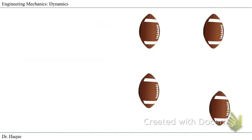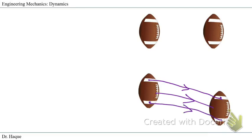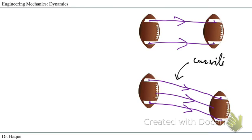The second type is curvilinear translation. This happens when you have particles — one here and one here — and after the body moves to a new position, the particles are moving along a curved path, not a straight line. Before they were parallel along a straight line; now the path is curved. This is called curvilinear translation.